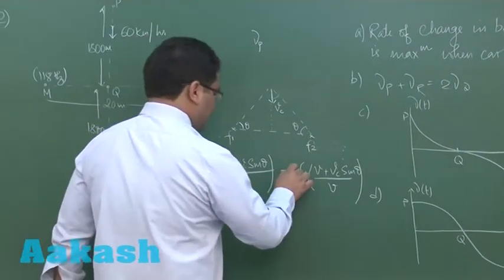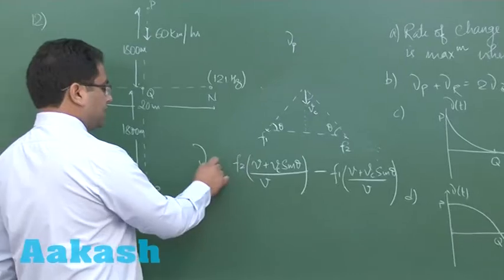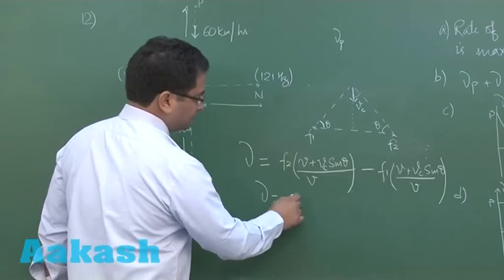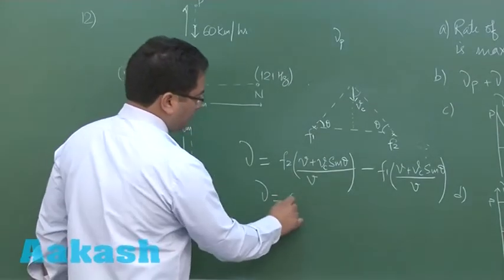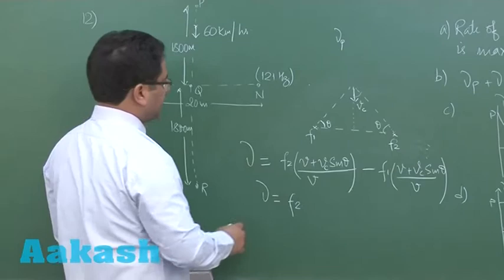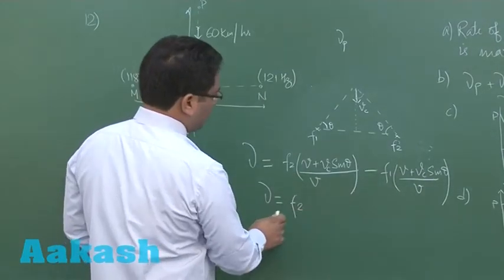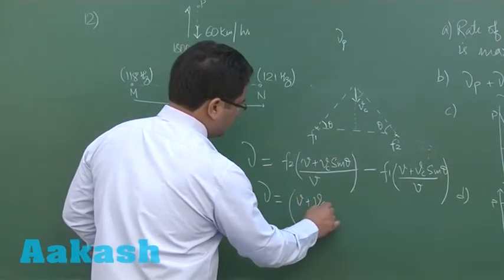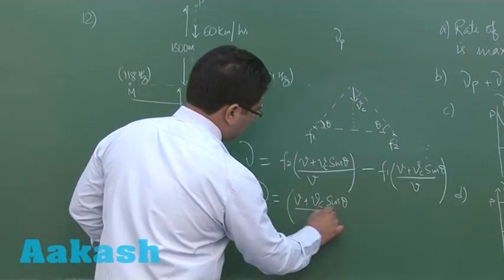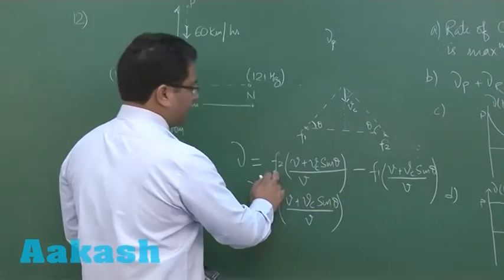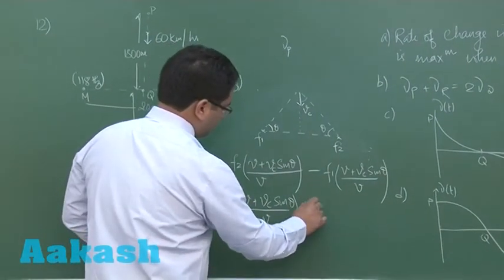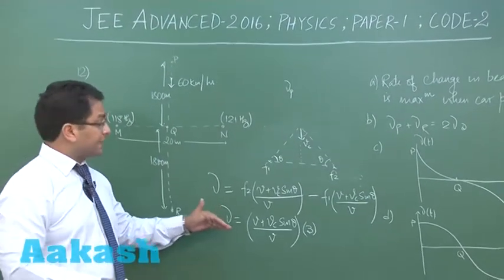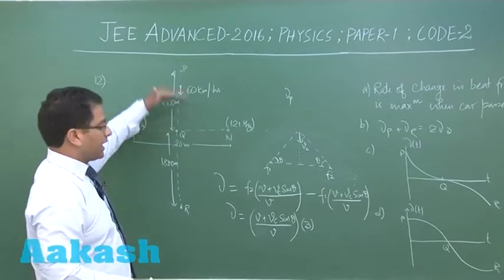Now the difference of that would be the beat frequency. And you can just see that comes out to be F2. You could see that F2 is 121 or we can take it in a very simple way. That would be V plus Vc sin theta by V into F2 minus F1 and that's going to be 3. So that would be the beat frequency detected when the car is in the upper half.